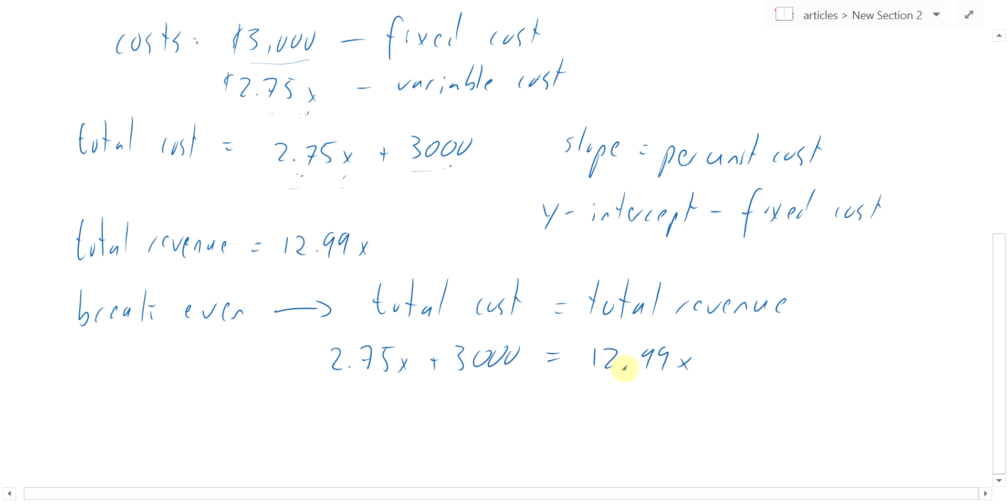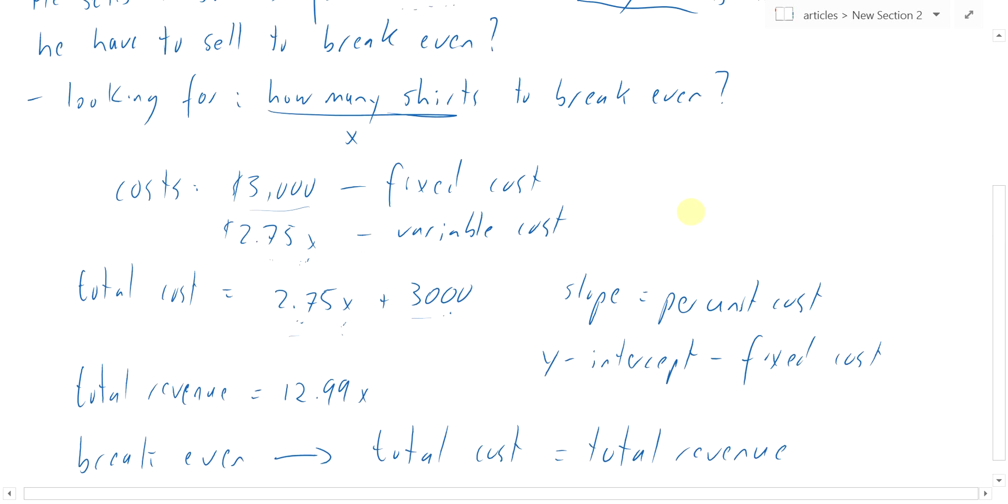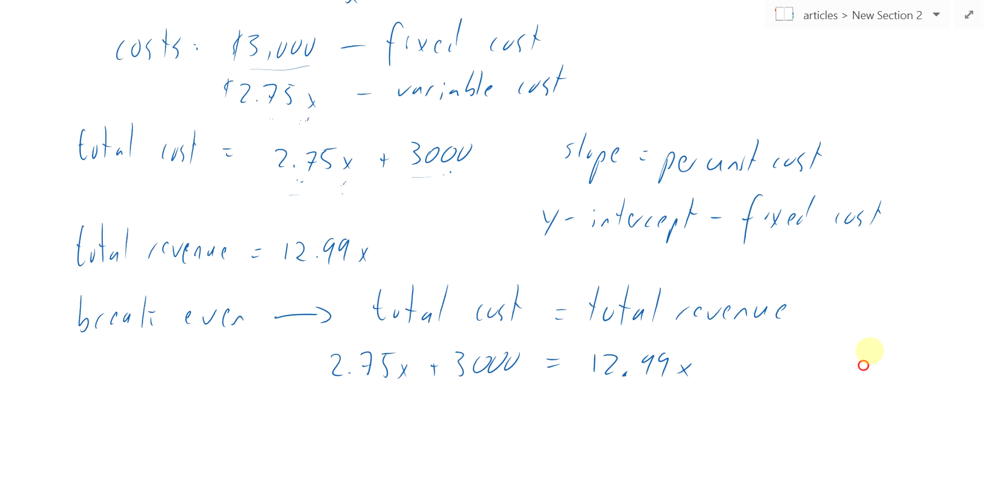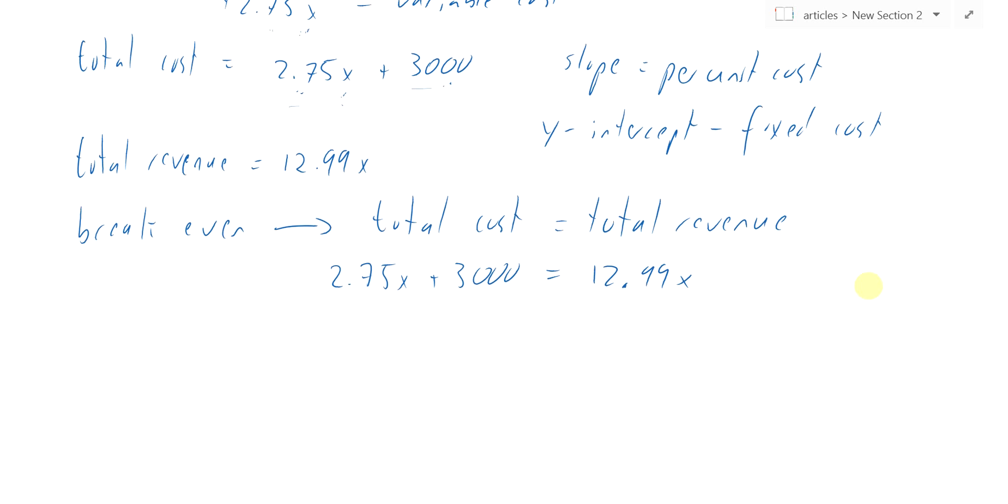And so solve this for x, right? Because that's what we're looking for. x is how many shirts does he have to sell to break-even. Okay, so how do we solve this? Well, let's move the $2.75x over to the other side, and we get $3,000 equals, oh, I have it here, $10.24x. We'll just subtract the $2.75x from both sides.